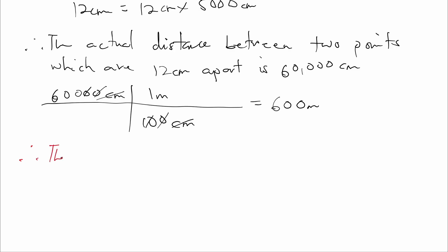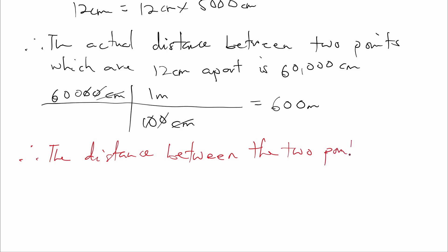Therefore, the distance between the two points is 600 meters. This brings us to the end of question 4b and to the end of question 4. In our next video, we'll be solving question 5 of the 2021 Core Mastery questions.